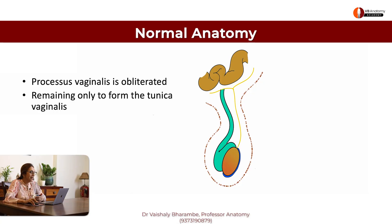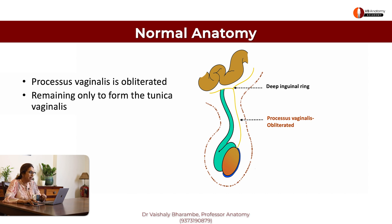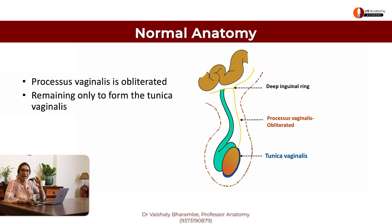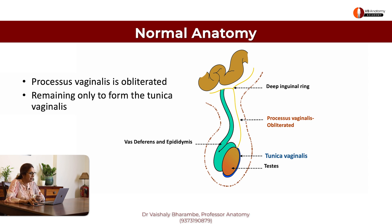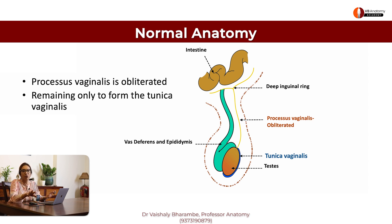Take a look at this image — this is normal anatomy. Here you're seeing the obliterated processus vaginalis, obliterated till the deep inguinal ring. Lower down, a little sac remains to surround the testes, forming what is called tunica vaginalis. This is the testes; behind this is the vas deferens and epididymis. And this is the intestine properly in the abdominal cavity, not coming inside the scrotal sac. This is normal anatomy.